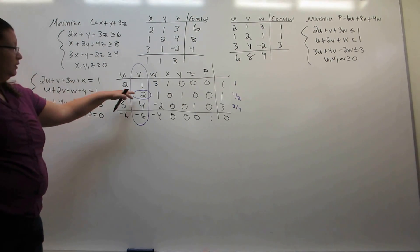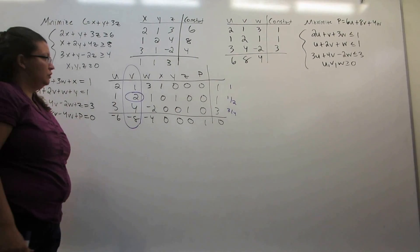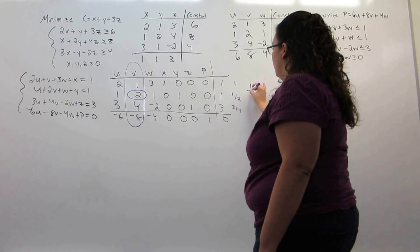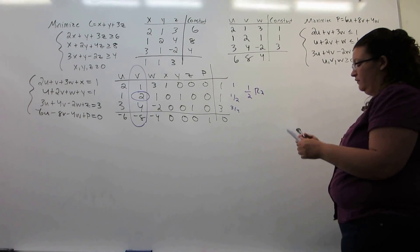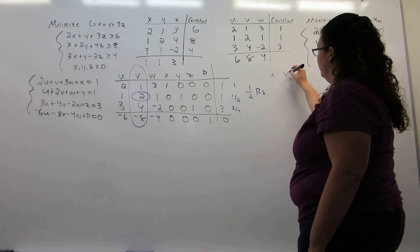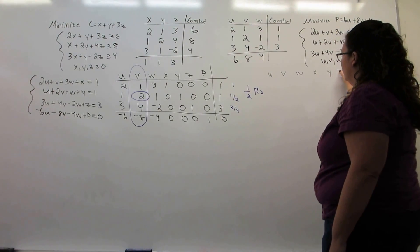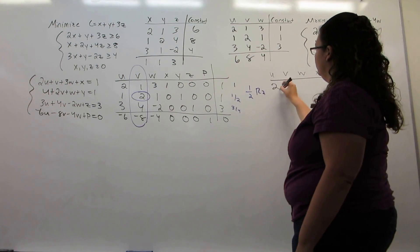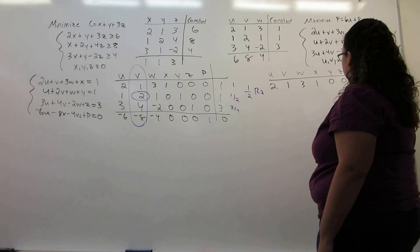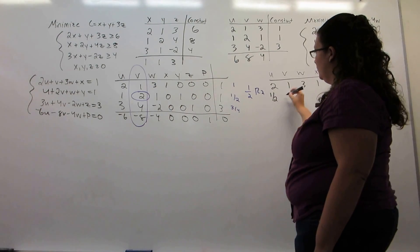Now, first goal is to turn this into a 1. So I'm going to take row 2 and multiply it by a half in order to get a 1 in our pivot position.